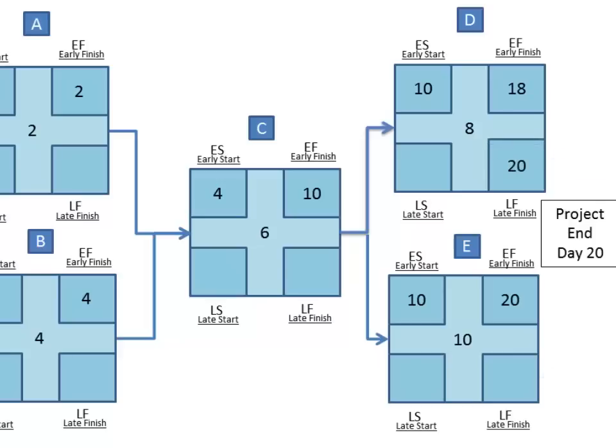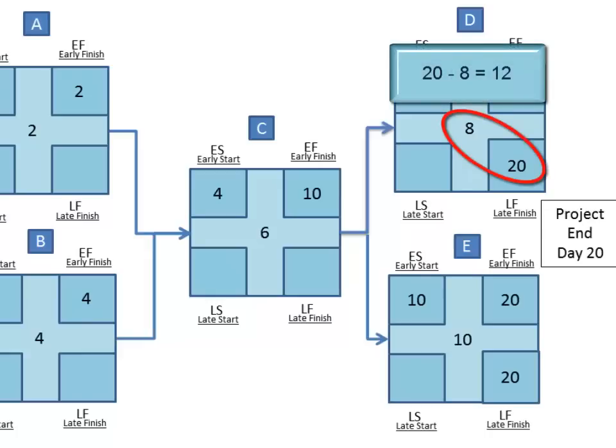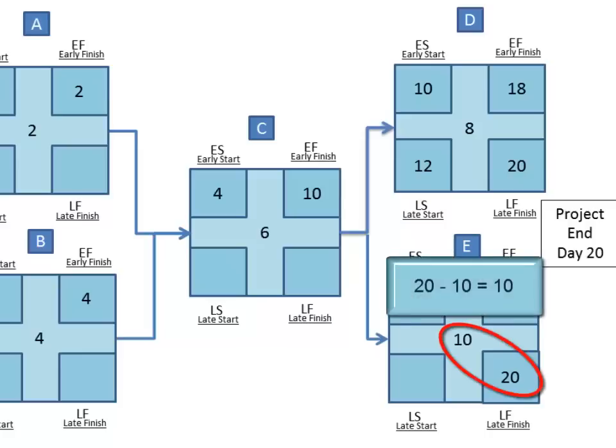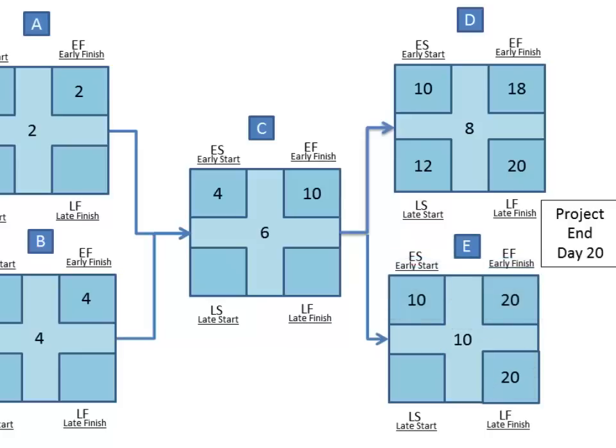And we'll also put twenty here for task E. Now we will calculate the latest day that task D can start. To do this, we subtract the duration of the task from the latest finish, or twenty minus eight, which is twelve. For task E, we follow the same method and subtract ten from twenty to get the early start of ten.